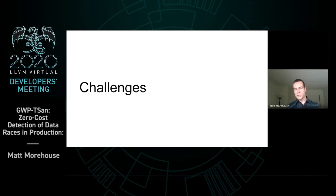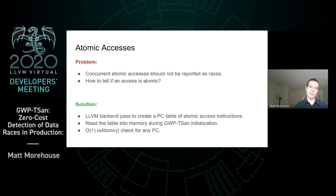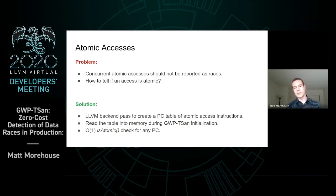We've hit a couple of challenges while implementing GWP-TSAN. The first one is dealing with atomic accesses. We don't want to report a race if only atomic accesses are involved, because it's not really a race. But how do we tell if an access is atomic at runtime? Our current solution is to embed a table of atomic access instruction addresses in the binary itself. Then, at program startup, we can read the table into memory and use it to check if any access is actually atomic or not.